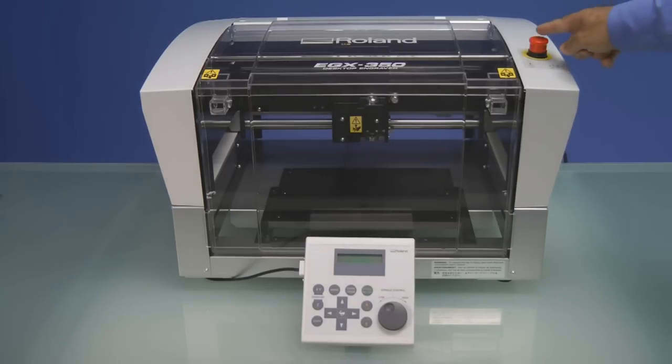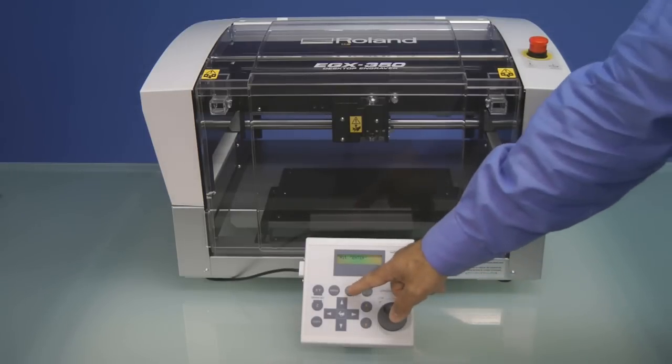To power on the EGX-350, rotate the red emergency stop button located on top clockwise until the machine powers on. The machine will display the model and firmware version.